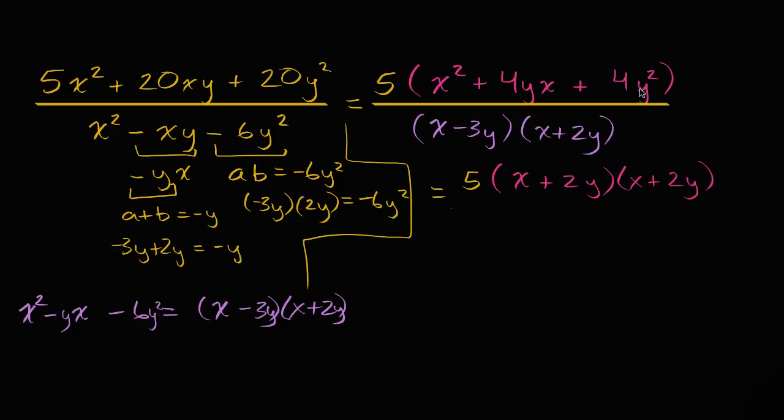Once again, two y times two y is four y squared. Two y plus two y is four y. And so, and that's all going to be over, that is all going to be over x minus three y, x minus three y times x plus two y.